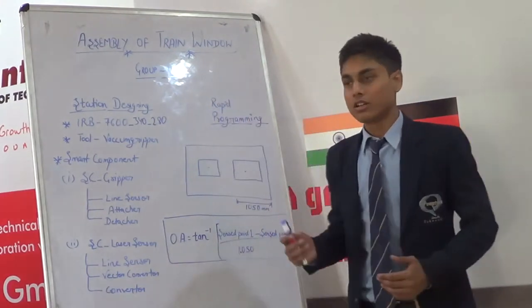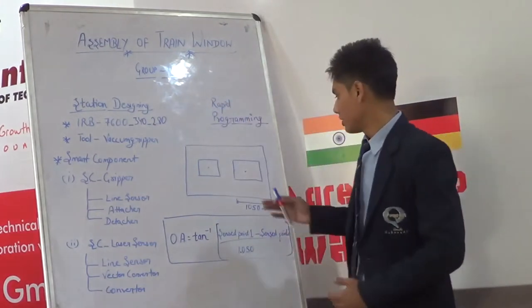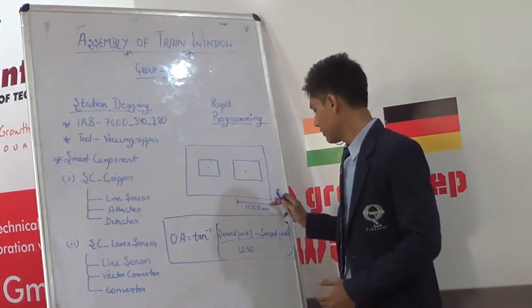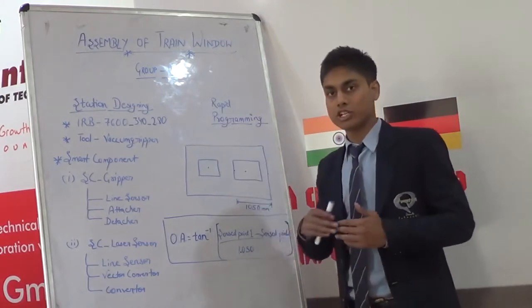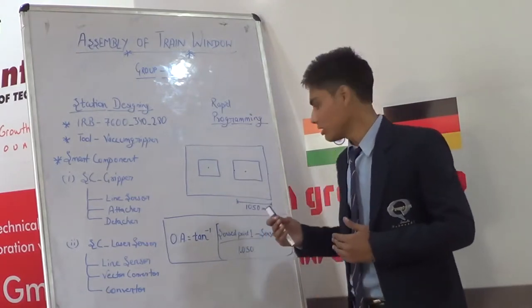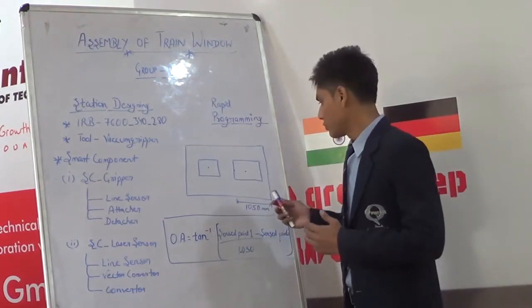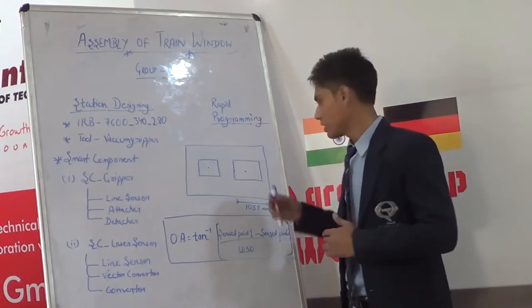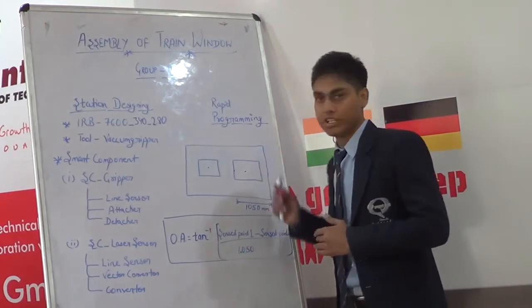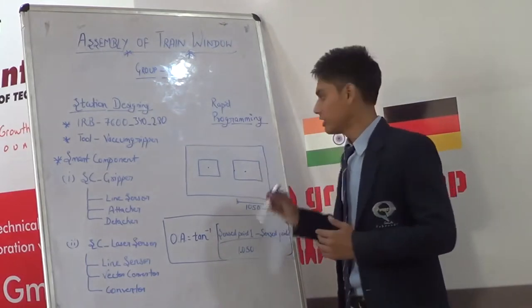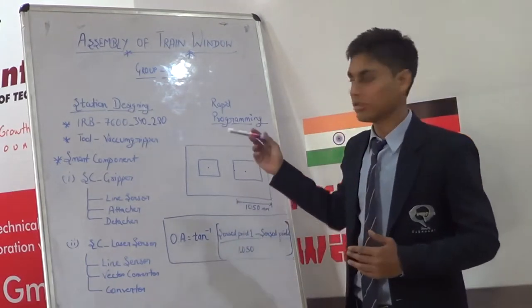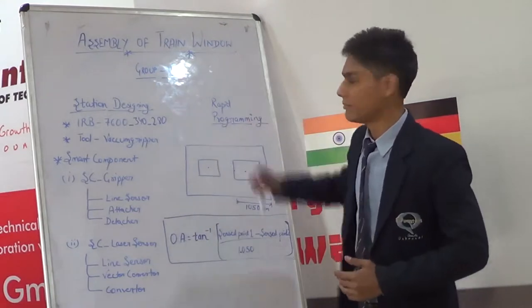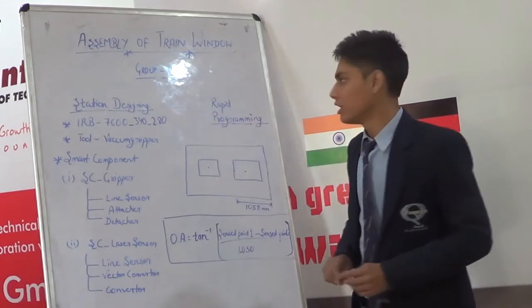In this project, we are given a train wall which is oriented to some angle and we have to put glass into the window cavity. This is the project distribution of the Assembly of Train Window.